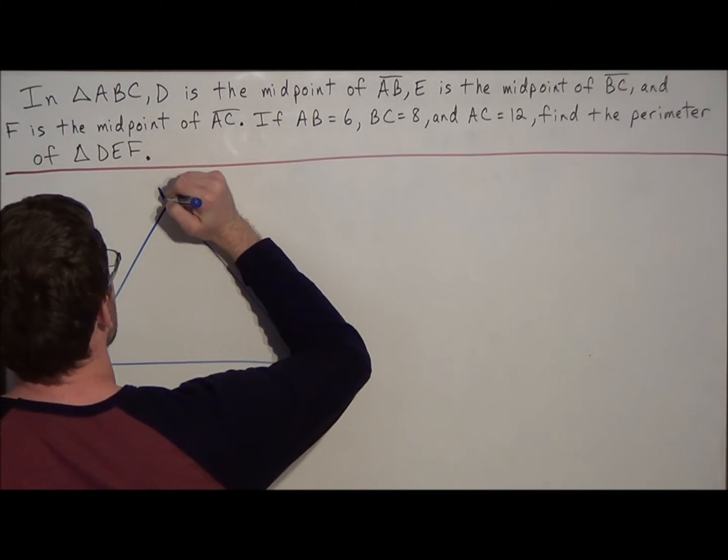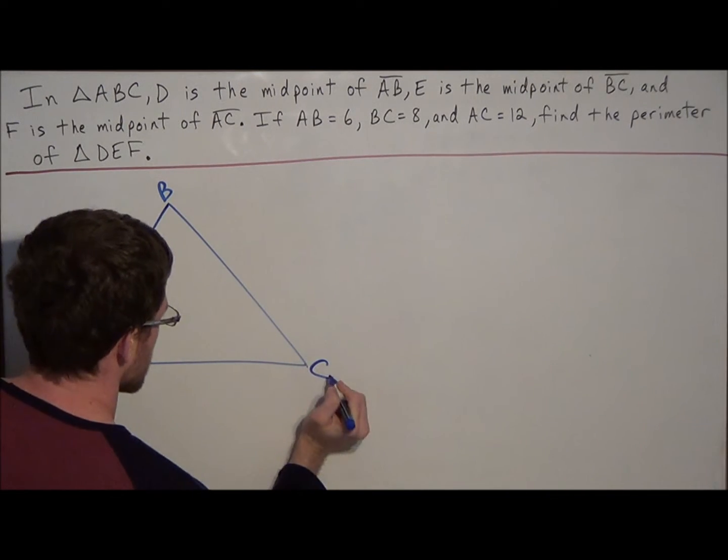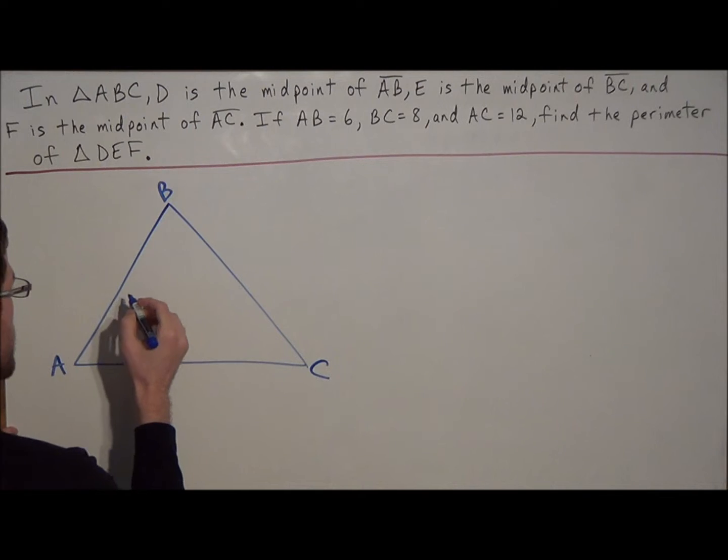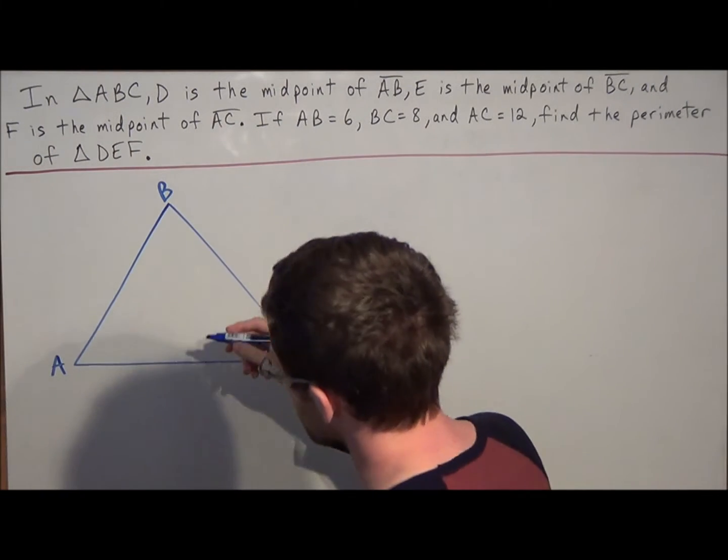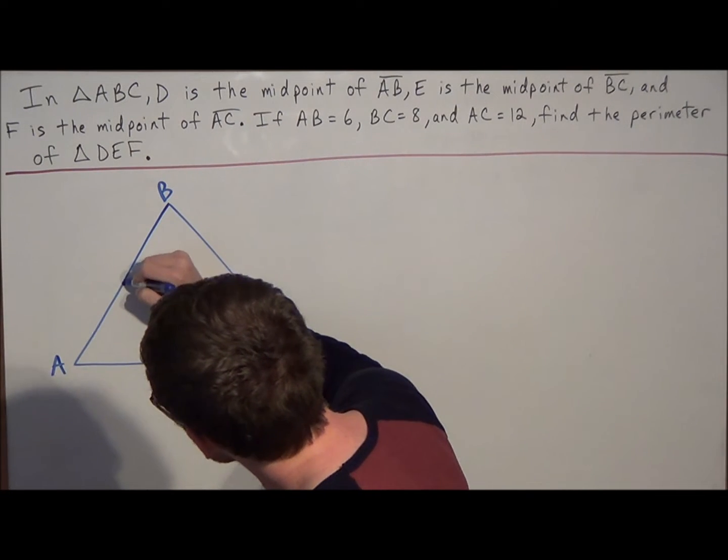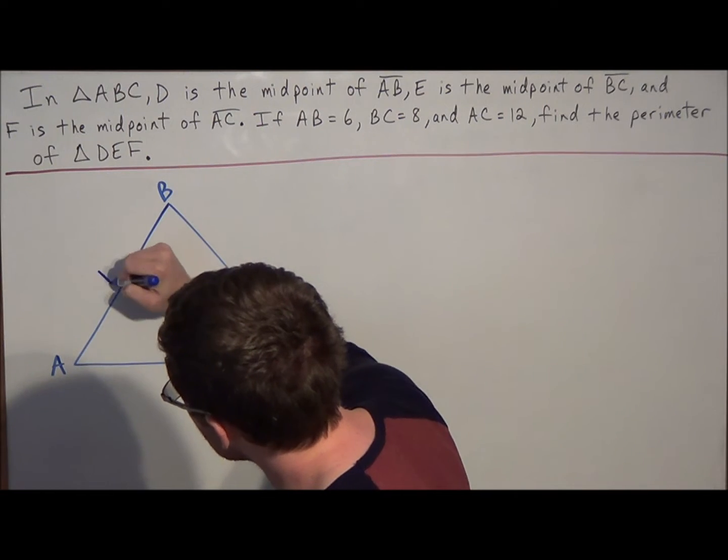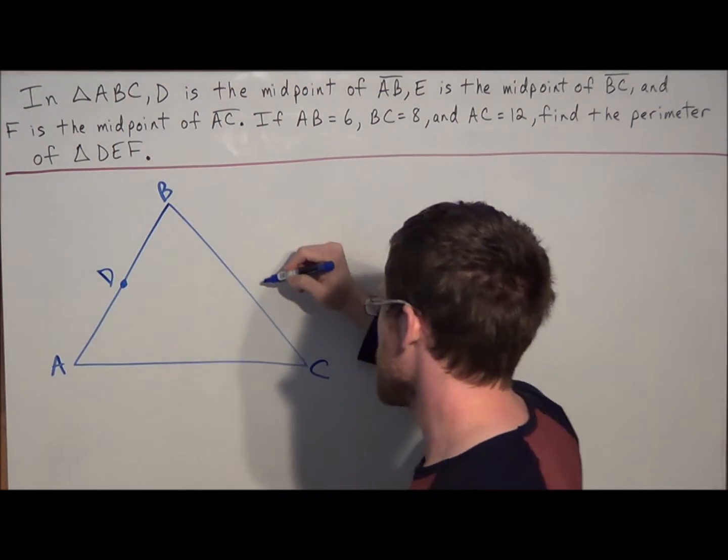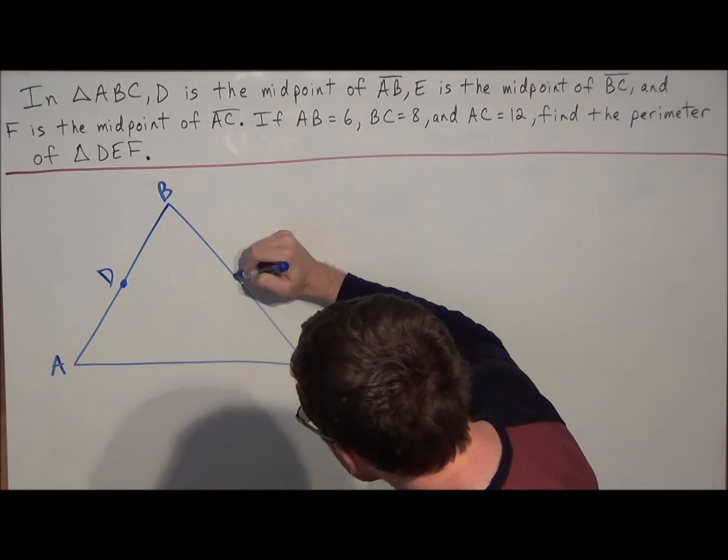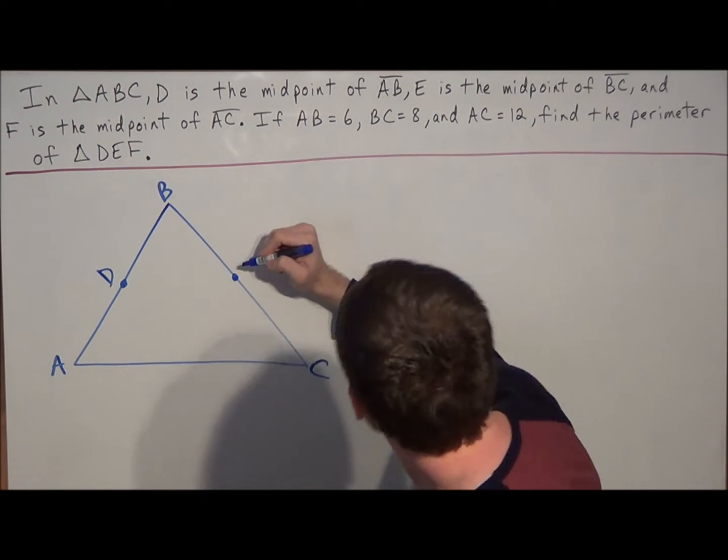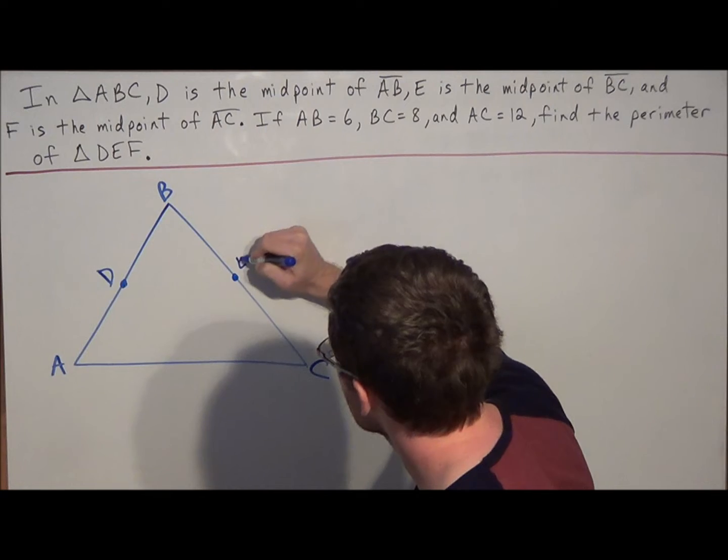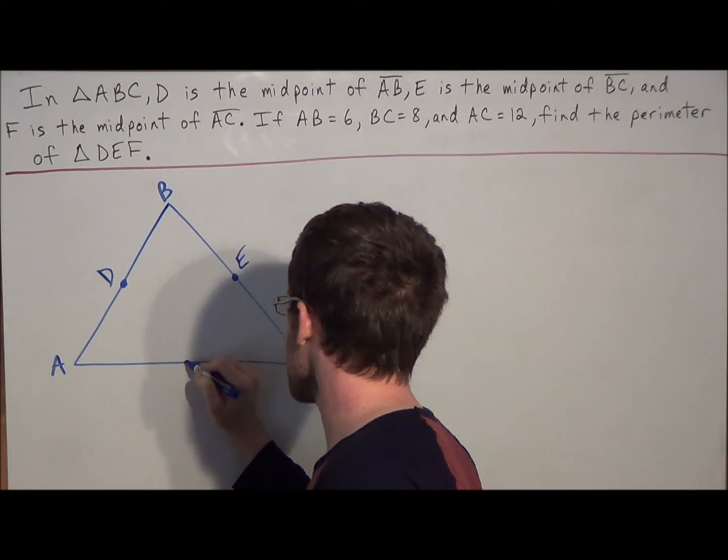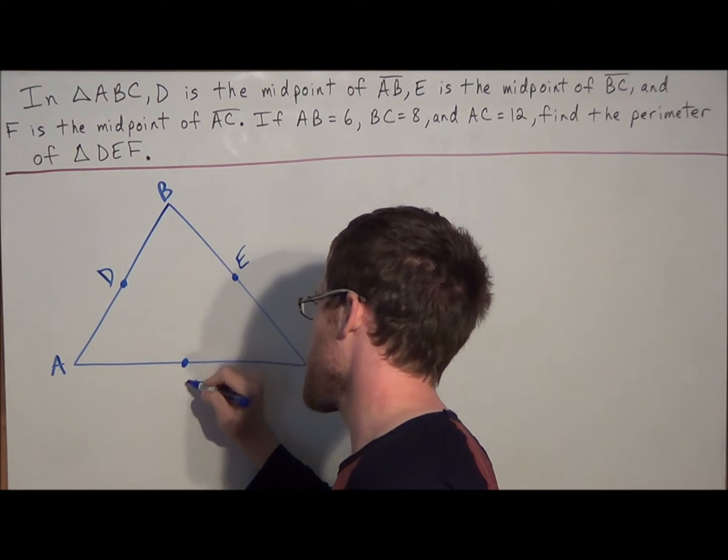We have ABC, and we're told that D is the midpoint of AB. So when we go over to this diagram, we can eyeball it and say right around here is going to be the midpoint, and we're going to call it D. E is the midpoint of BC, so we eyeball it and find the halfway point between B and C. And this is going to be point E. And then last, we have F as the midpoint of AC, which we can say is going to be right about here.